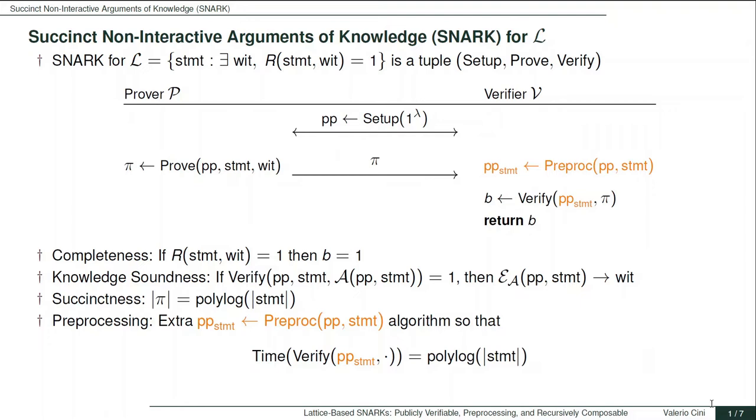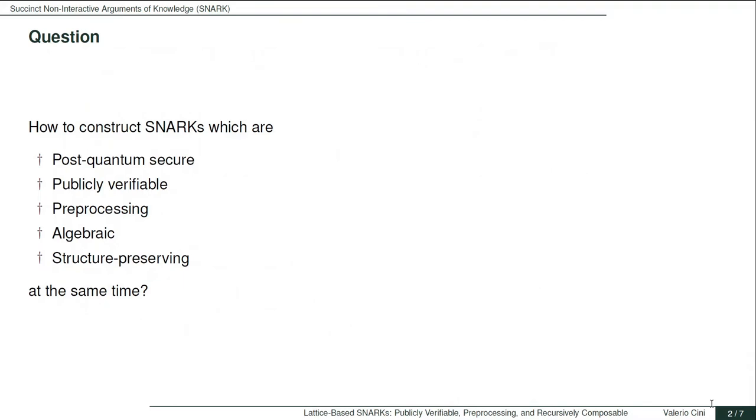Now that we have recalled what a SNARK is, we can state the question that we tried to address in this work. The question is, is it possible to construct a SNARK that satisfies all these properties at the same time? The properties are post-quantum secure, by which in a very liberal interpretation we mean any scheme not based on groups, publicly verifiable, which means that anyone could run the verification algorithm, preprocessing, which I have defined in the previous slide, algebraic, by which we mean that the construction uses only algebraic operations defined over the mathematical structure that the scheme is constructed over, and structure-preserving, by which we mean that the relation checked by the verification algorithm should be supported by the SNARK itself.